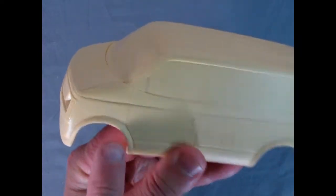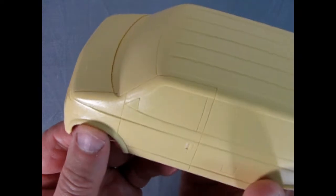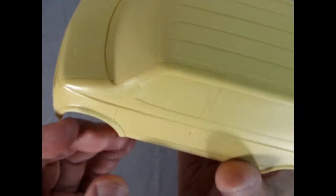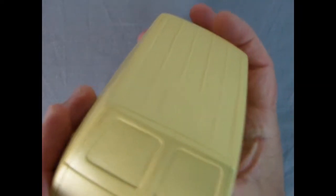Now there are bits of flash but that is common on resin. And there's also these little teeny pinholes like that. You can fill those in with some baking soda and crazy glue. That's one way to do it, or use body filler.